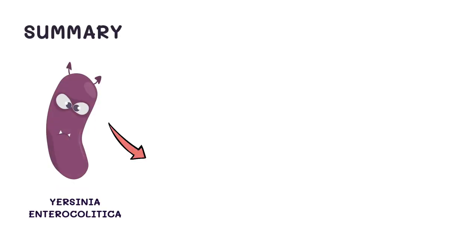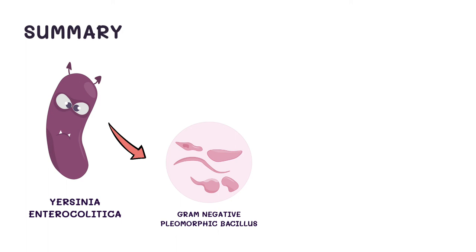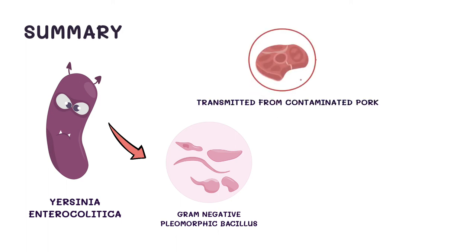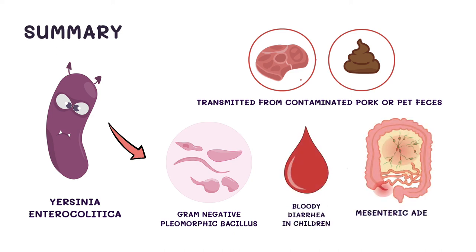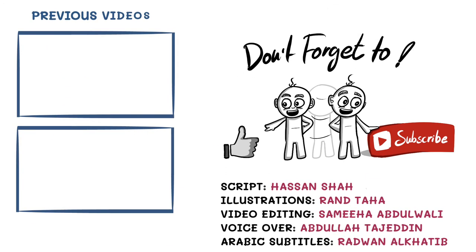To summarize: Yersinia enterocolitica is a gram-negative pleomorphic bacillus. It is transmitted mostly from contaminated pork or pet feces. It can lead to bloody diarrhea in kids and can cause mesenteric adenitis, otherwise known as pseudo-appendicitis. And that's it for Yersinia enterocolitica — we hope you found it beneficial. Don't forget to like, share, and subscribe to receive our latest explanations.